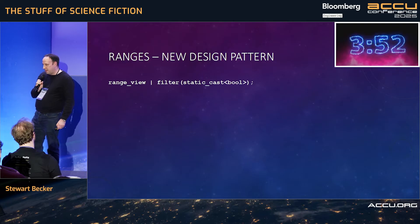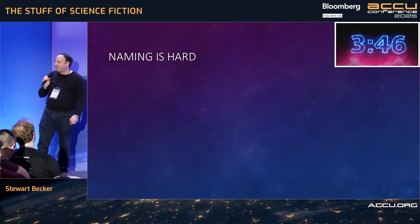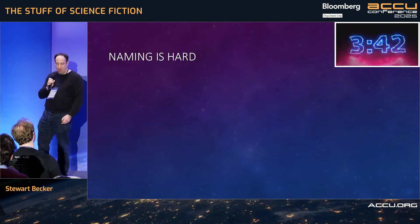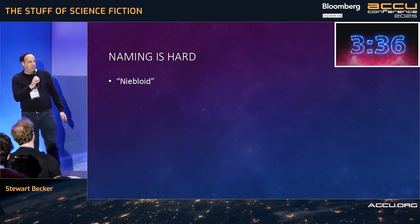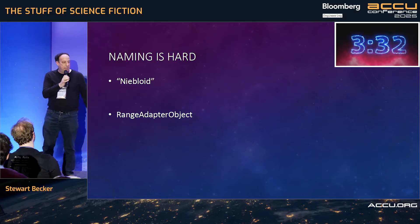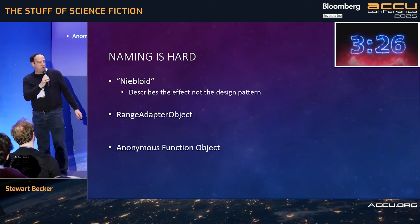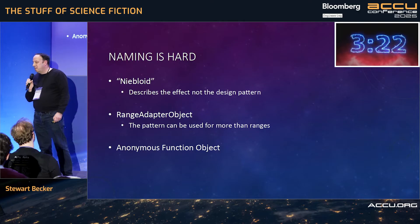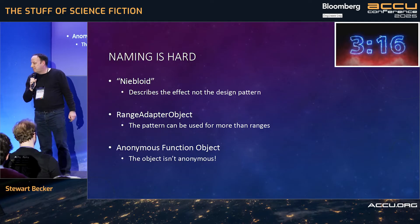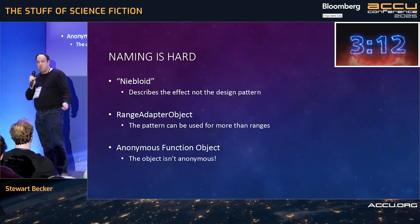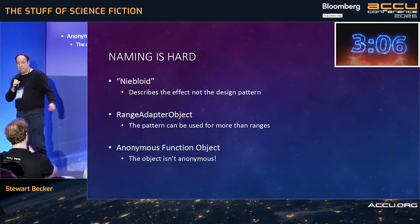But there is a problem. It's a perennial problem in programming, and that is naming is hard. This pattern has got so many names, and frankly, I don't really like any of them. Sometimes they're called niebloids, after Eric Niebler, who pretty much invented ranges. I've seen the phrase 'range adapter object' or 'anonymous function object.' All of these aren't great. 'Niebloid' describes the effect rather than the design pattern itself. It's not only related to ranges, so I don't like 'range adapter object,' and the object isn't anonymous — the type isn't named, but the object itself very much is. Filter, transform — they are all examples of this same design pattern. Those are definitely names.